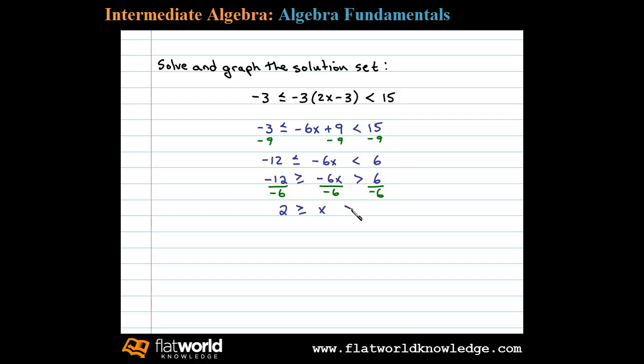Now this is equivalent to negative 1 is less than x which is less than or equal to 2. Now that we've solved the compound inequality, we need to graph these solutions on a number line. Here we need to shade in all the real numbers that are greater than negative 1.